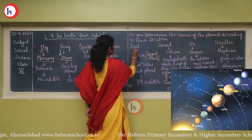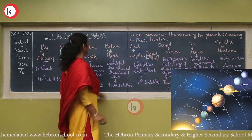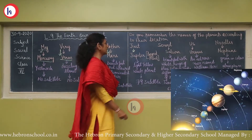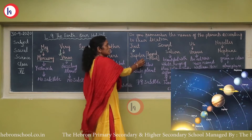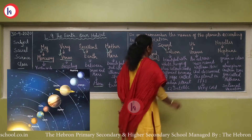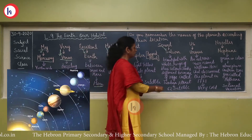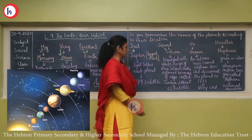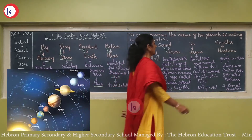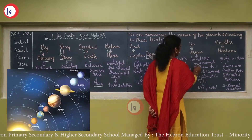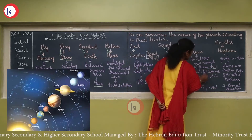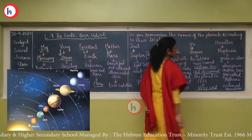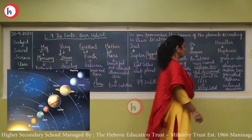M is for Mars — it is a beautiful red-colored planet with two satellites. J is for Jupiter — a light yellow-white planet with 79 satellites; it is the largest planet in our solar system. S is for Saturn — beautiful with white and blue rings, also called the turban planet, with 62 satellites. U is for Uranus — discovered by astronomer William Herschel in 1781; it is a very cold planet. And last, Neptune — it is green in color.